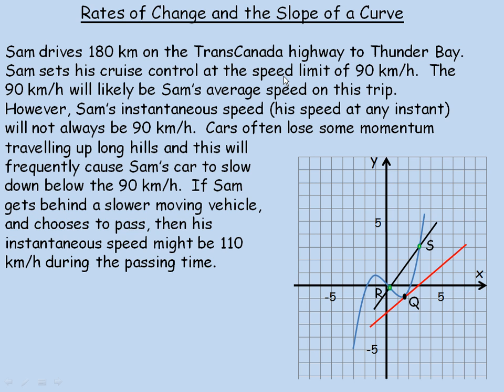The 90 km per hour could easily be Sam's average speed for the entire trip. If the trip takes him 2 hours, we calculate speed as distance — 180 km divided by time. So 180 km divided by 2 hours would be 90 km per hour, and that could be his average speed for the entire trip.